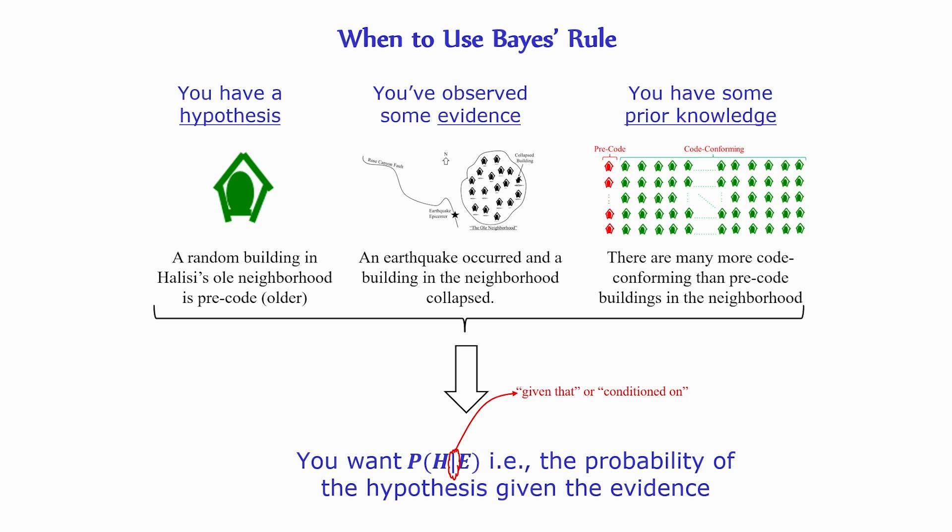Now in probability theory notation, this vertical bar means given that or condition on, as in we are restricting our view of the prior only to the possibilities where the evidence holds.